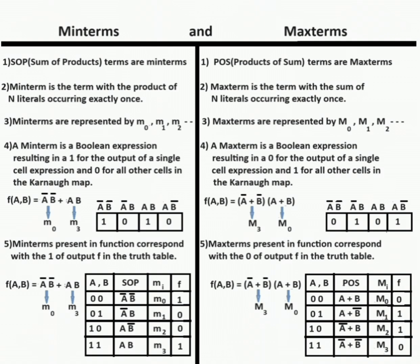In a Karnaugh map, minterms are represented by 1s in the cell and remaining by 0s. In a Karnaugh map, maxterms are represented by 0s and remaining by 1s.